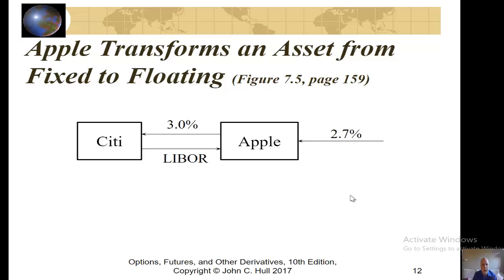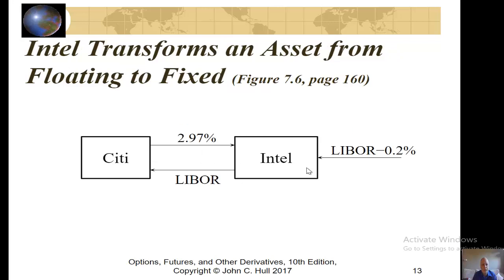Here we have Apple transforming an asset from a fixed to a floating rate. This is an asset that initially paid Apple 2.1%. Now they engage in this swap with Citigroup, paying out 3% and receiving LIBOR, so now they go from a fixed rate asset to having an asset that pays LIBOR plus 3% minus 2.7%, or LIBOR plus 0.3%. Yet another example: Intel transforming an asset from floating to fixed. Intel initially is receiving a payment of LIBOR minus 0.2%. They engage in this swap with Citigroup. The LIBORs cancel out and now they receive a fixed asset of 2.97% minus 0.2%, or 2.77% fixed rate.